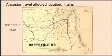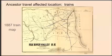Some American settlers moved to new homes by railroad. Railroads were faster, less expensive, and healthier than overland travel by covered wagon. Railroads often organized immigrant trains to encourage settlement and eventually businesses along their routes. The map on the slide is an 1887 map of the Fox River Valley Railroad in Wisconsin and Illinois.